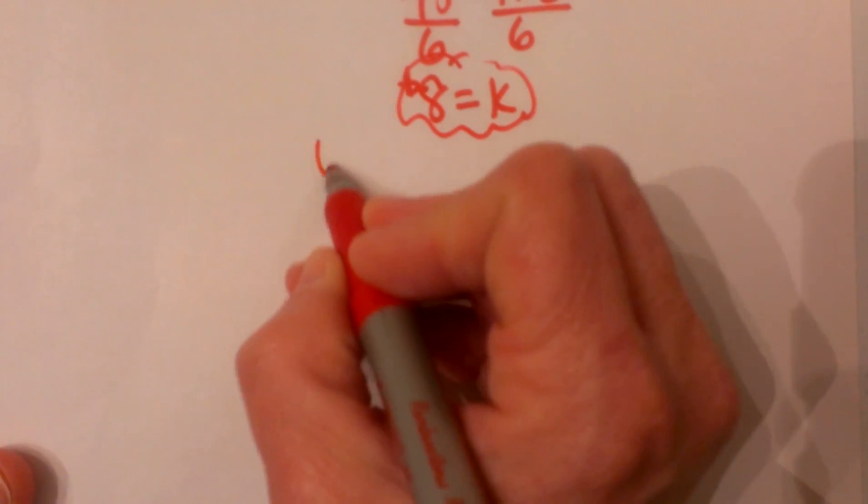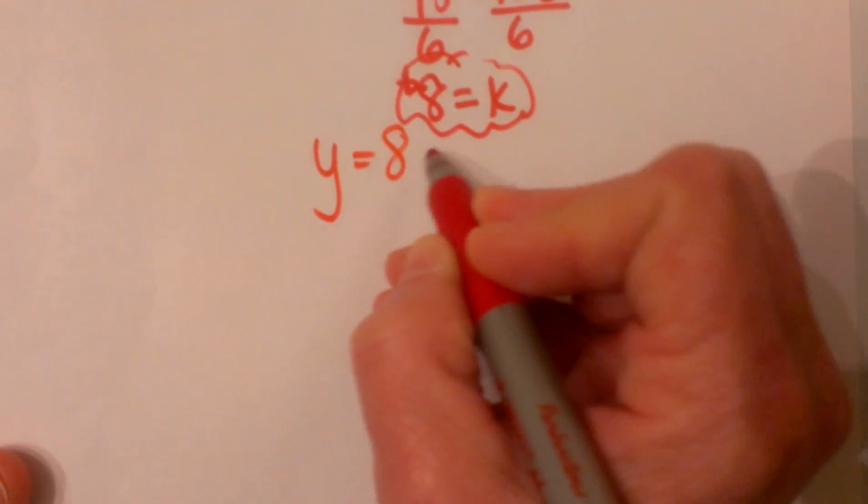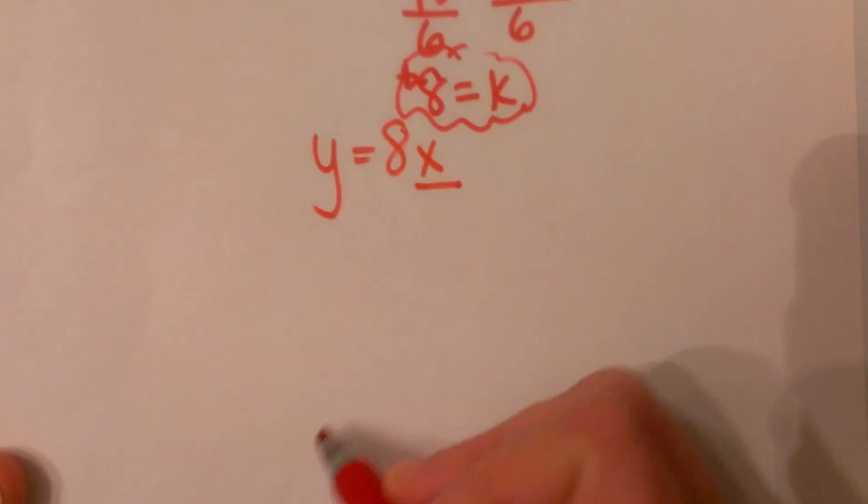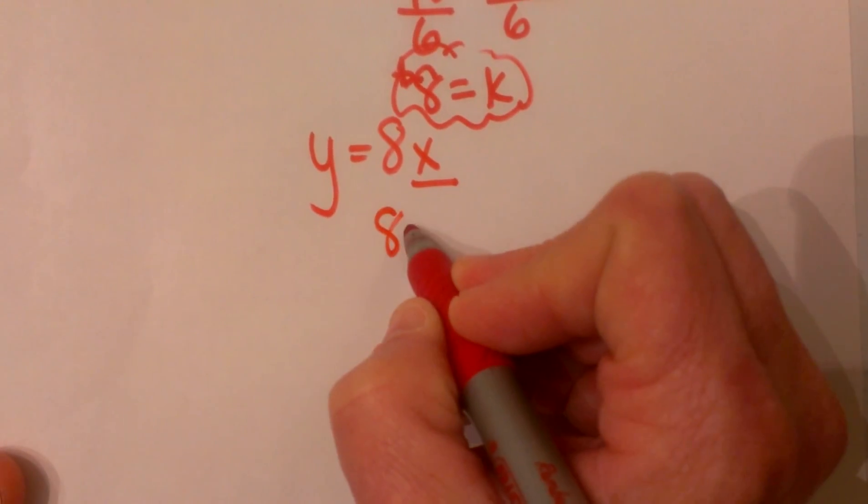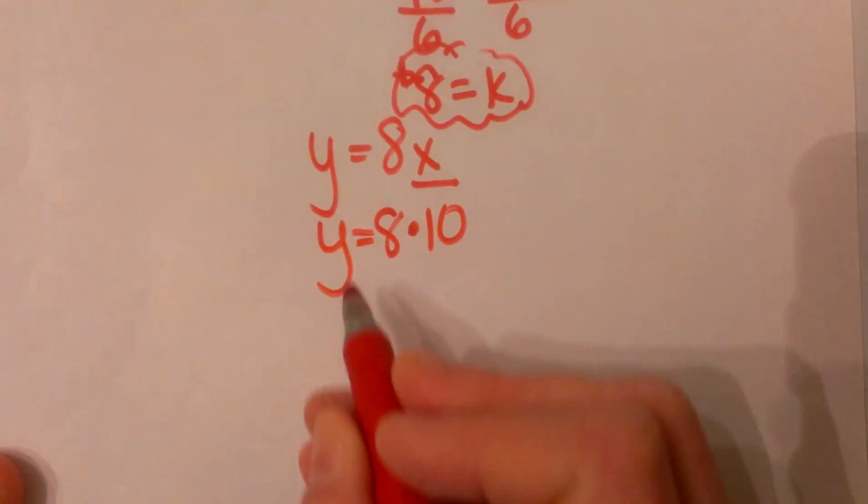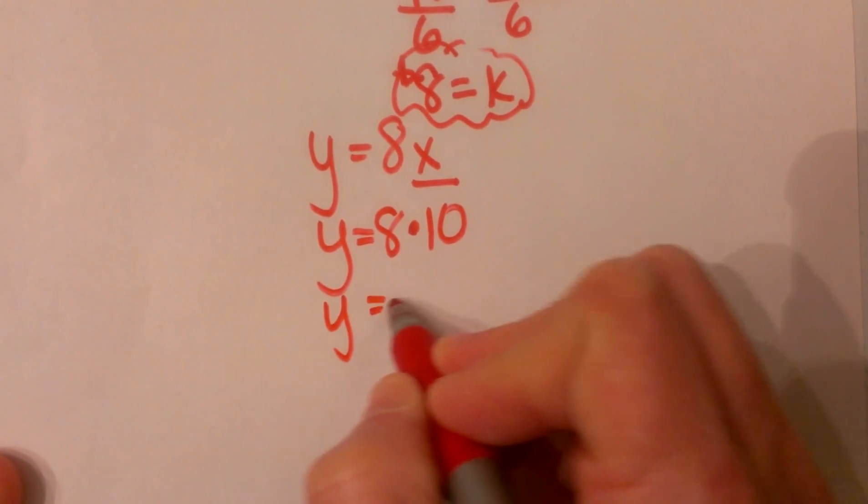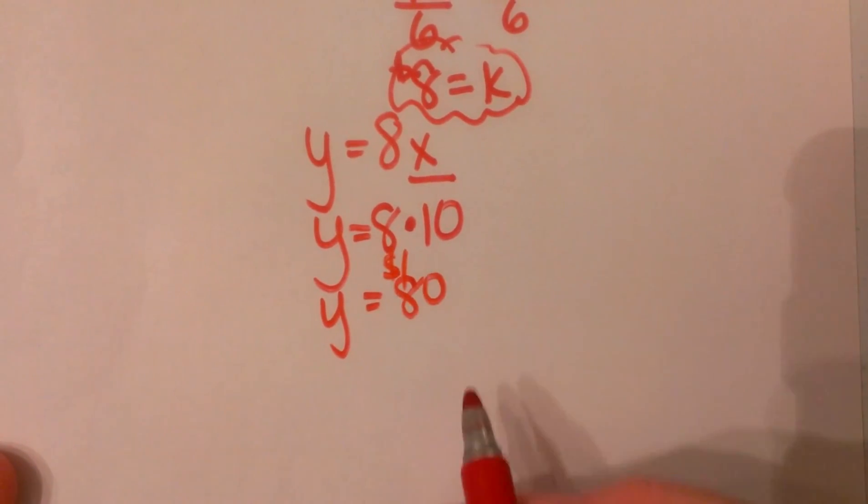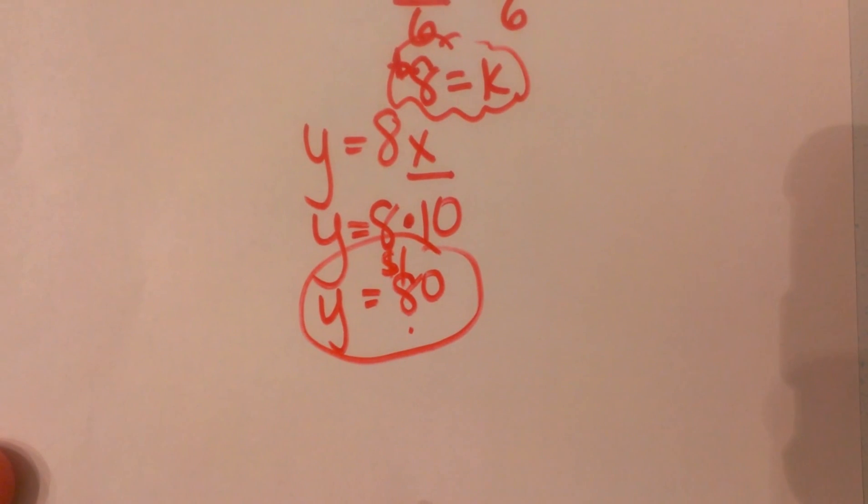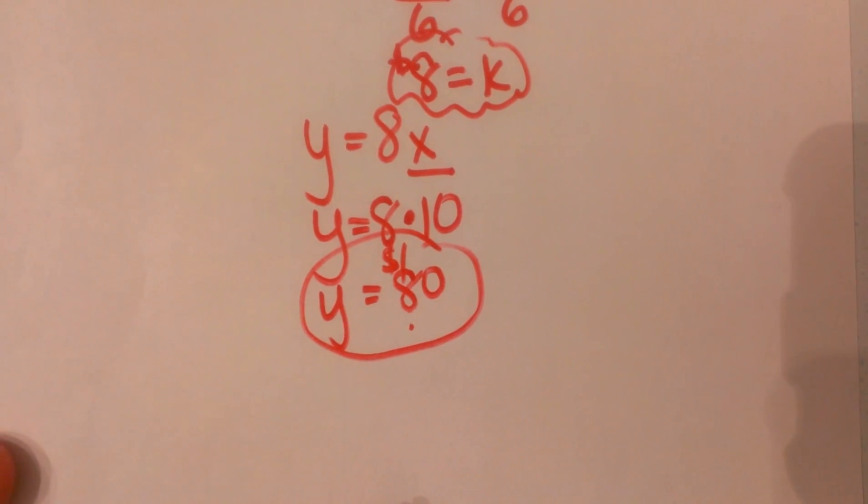So let's go down here, our equation is y equals 8x. Our hours is x, so let's plug in his 10 hour shift and we can get our y value. So we get y is equal to 80. So that means on Saturday he can earn $80 for working his 10 hour shift. And that is a direct variation problem.